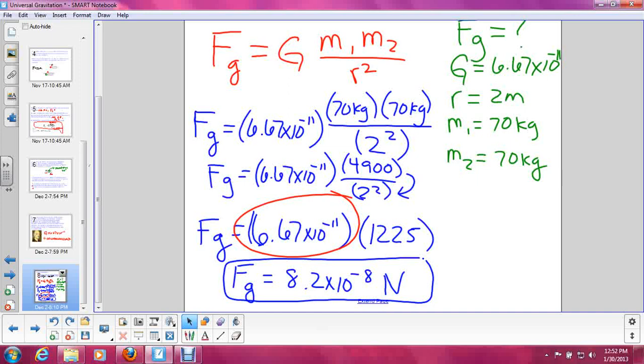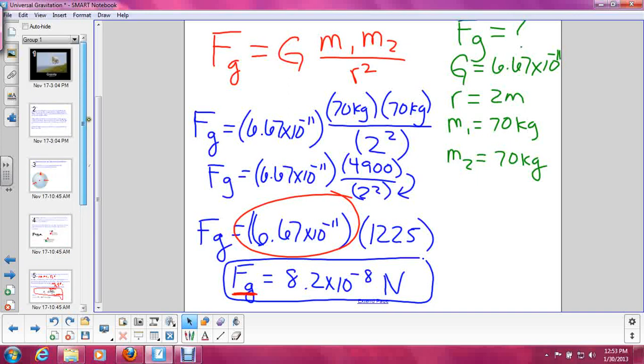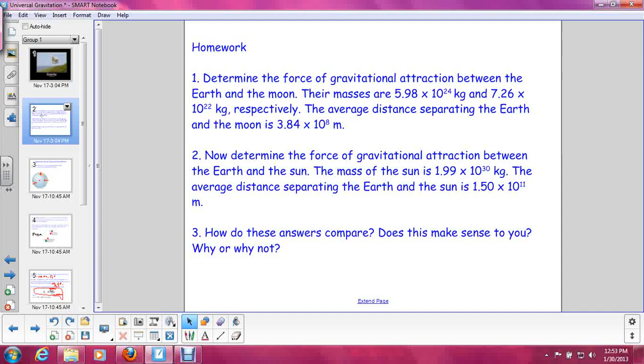It starts becoming significant when objects get as big as the Earth. That is why we are gravitationally attracted to the Earth. Because its mass is so large that the gravitational force is then large enough to have an effect on us. So hopefully that makes sense to you. We will talk about this in class a little bit more. But I want you to try these homework problems and have them ready to turn in the next time I see you.